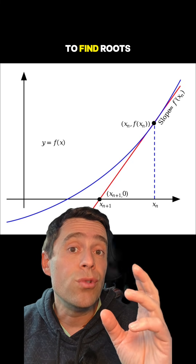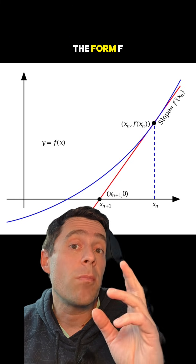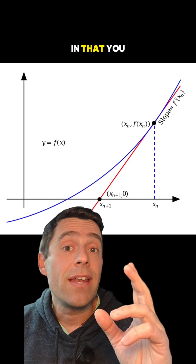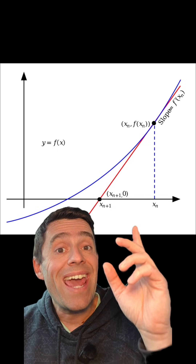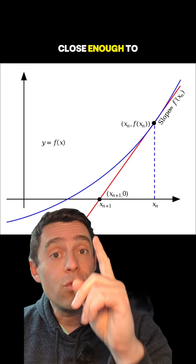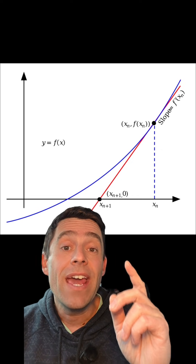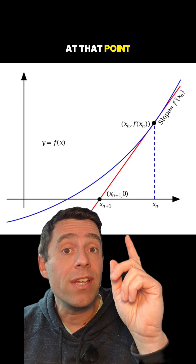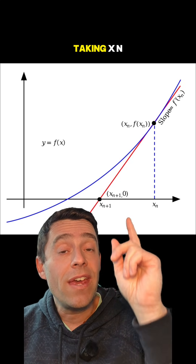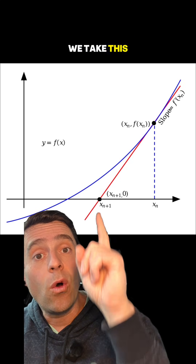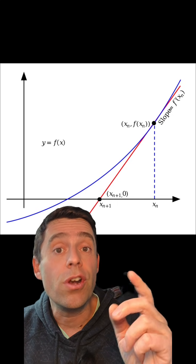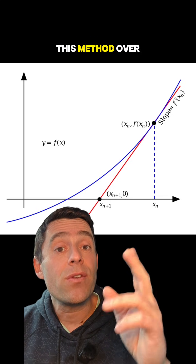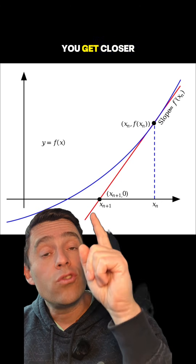The so-called Newton-Rafson method is a method to find roots of equations of the form f(x) = 0, and it's a very elegant method. You start from a point x_n that is close enough to a root that you're trying to find, then trace the tangent line at that point, and instead of taking x_n you take this other point that is closer to the actual root.